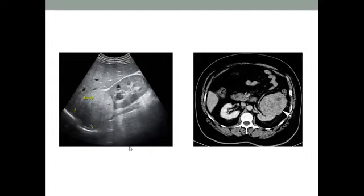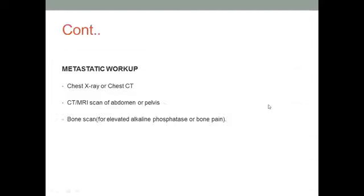Ultrasound of the KUB is done to see the adrenal mass, and CT abdomen is done to assess the extension and size of the mass. Here you can see a large mass — this is the normal kidney and this is the big mass. To check for metastasis, we can do a chest X-ray or CT chest, usually a CT scan of the abdomen and pelvis. A bone scan with ALP if ALP is high or there is a history of bone pain.